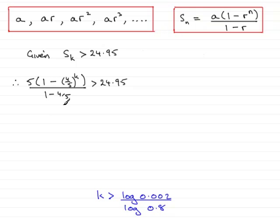So I just need to clean this up. You could do 1 minus 4 fifths, which is 1 fifth. And 1 fifth, let's just cancel that out, goes into the 5 25 times. So I'm going to rewrite that as 25 multiplied by 1 minus. Now instead of having 4 fifths, I prefer to have 0.8. So I'm going to put 0.8 to the power k, and that's greater than 24.95.